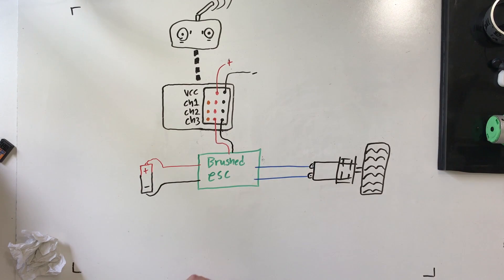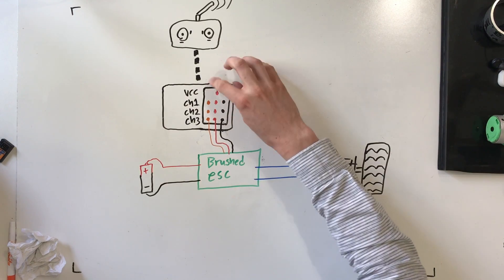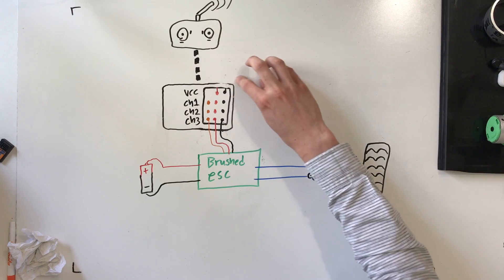Now most electronic speed controllers will have a battery elimination circuit built in, which means once you connect the speed controller to your receiver and you connect the speed controller to its battery, your receiver no longer needs an extra battery input. So we can erase that here and the speed controller is going to provide the receiver with all the power that it needs.